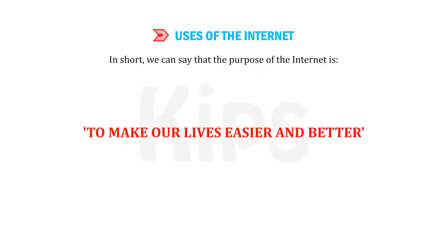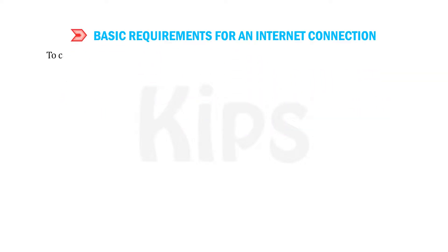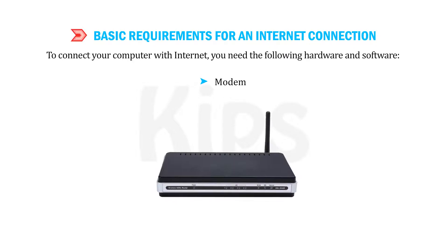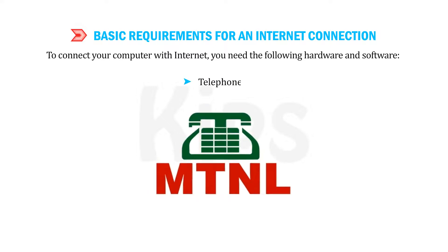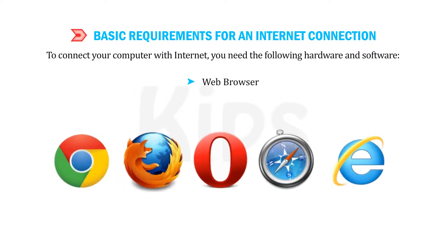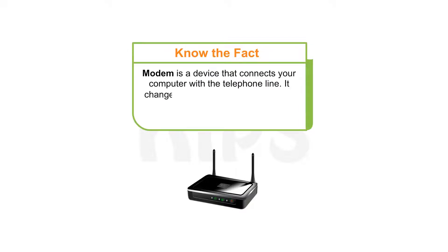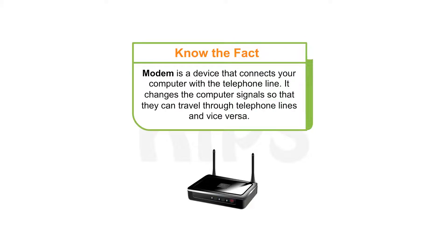Let us understand the basic requirements for an internet connection. To connect your computer to the internet, you need the following hardware and software: a modem, a telephone line, an internet connection, and a web browser. Note that a modem is a device that connects your computer with a telephone line. It changes the computer signals so that they can travel through telephone lines and vice versa. Now let's talk about a few internet terms.